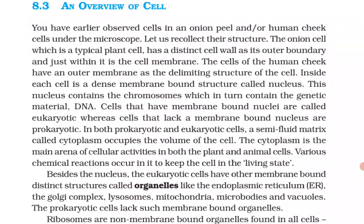The onion cell, a typical plant cell, has a distinct cell wall as its outer boundary, and just within it is a cell membrane. The cells of the human cheek have an outer membrane as the delimiting structure. Inside each cell is a dense membrane-bound structure called the nucleus, which contains chromosomes, which in turn contain the genetic material DNA. Cells that have membrane-bound nuclei are called eukaryotic, whereas cells that lack a membrane-bound nucleus are called prokaryotic.